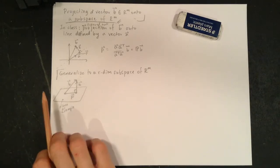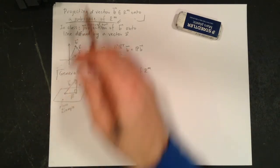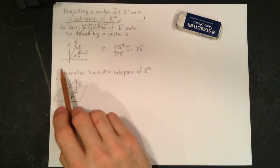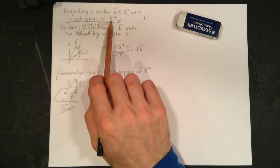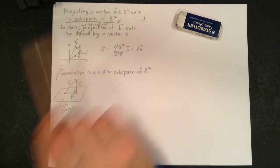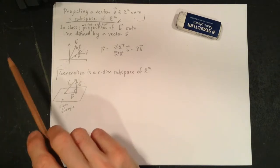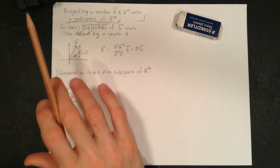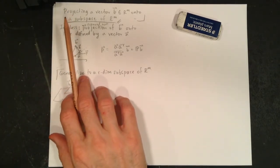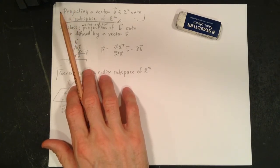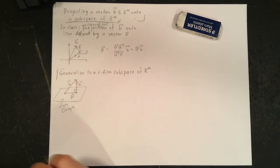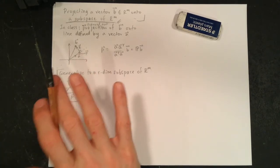Okay, so this is a generalization of the projection we talked about in class. We talked about a projection onto a line. So this is going to be projecting a vector onto a subspace of R^m of any dimension less than or equal to m. And the point of doing this is just to sort of add to the normal equation, right? So we'll see we get the normal equation again, but just to see it in another view.